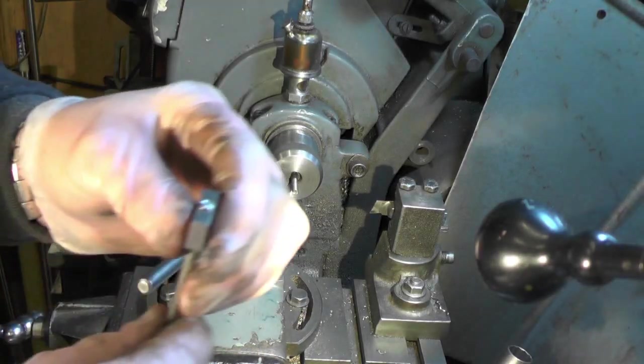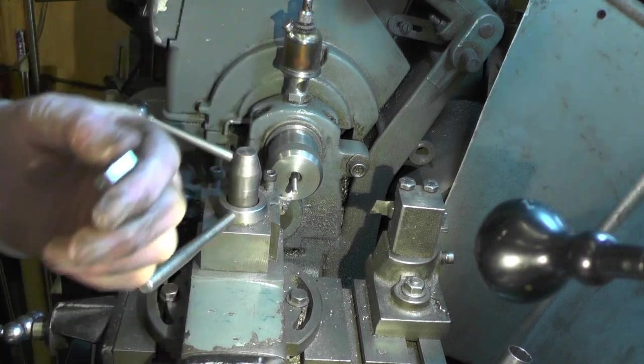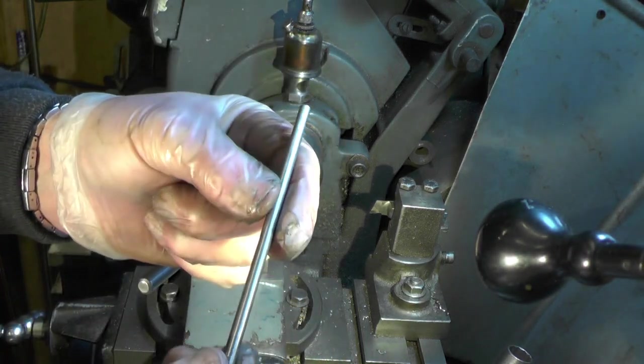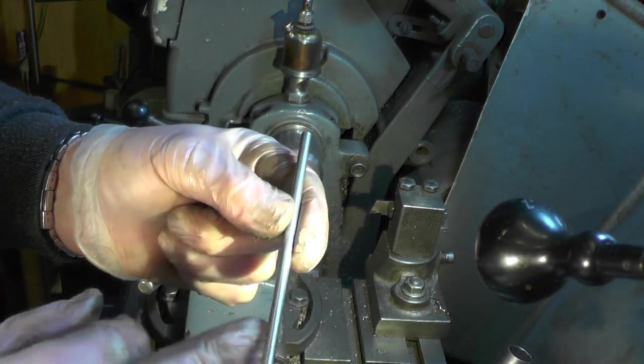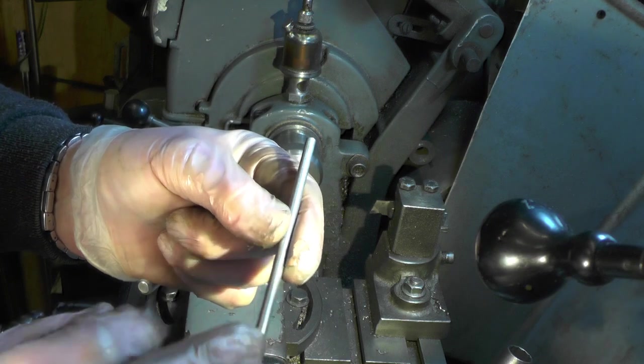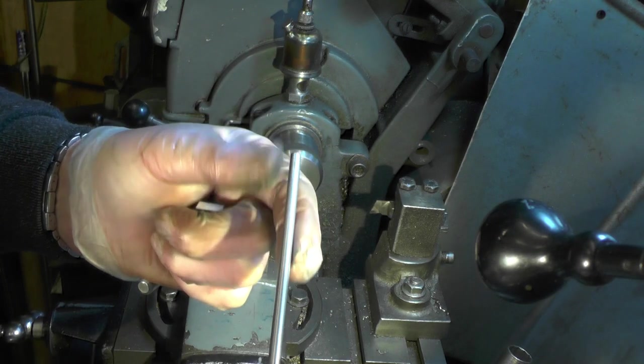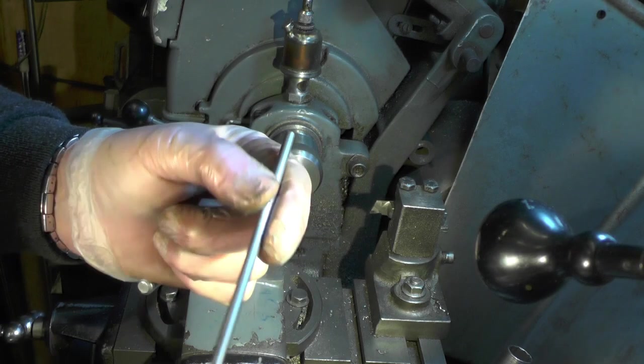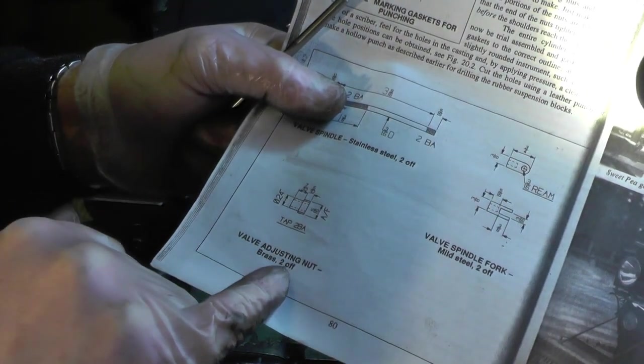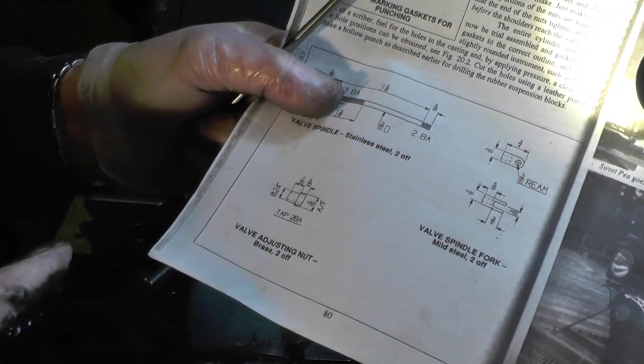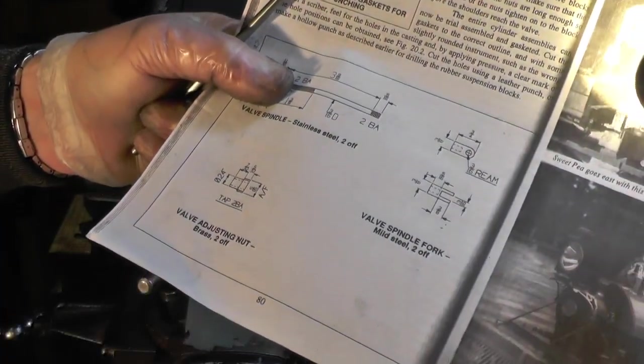So before I go back onto the actual valve, I'm going to carry on and do the valve spindles. You need two pieces of three sixteenths, four and nine sixteenths long. Valve adjusting nuts, they're made in brass. So I may do all these little ancillary components before I move back onto valves.